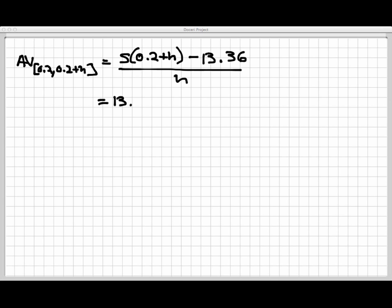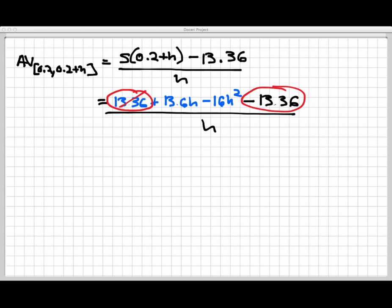13.36 plus 13.6h minus 16h squared. And then we were subtracting off 13.36, and this is all being divided by h. Now the thing to notice here is that this 13.36 and this 13.36 are opposites. So they're gonna cancel off.